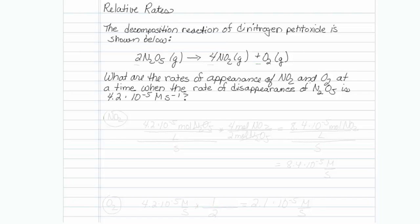This is how to determine relative rates. If you know the rate at which one reactant or product changes, you can determine the rates of others. The decomposition reaction of dinitrogen pentoxide is shown below.